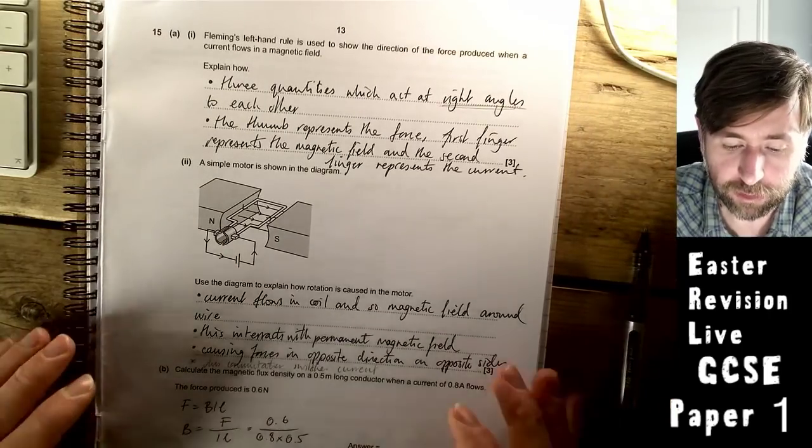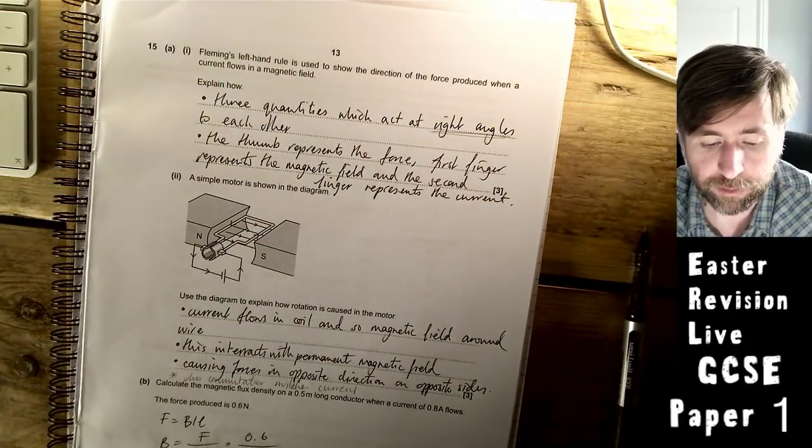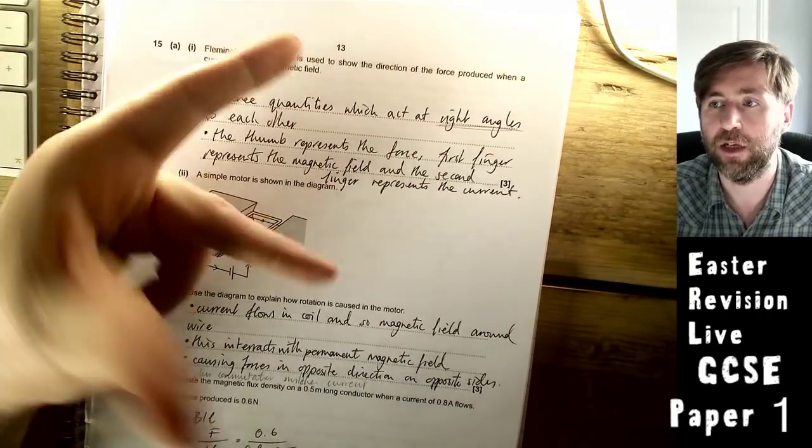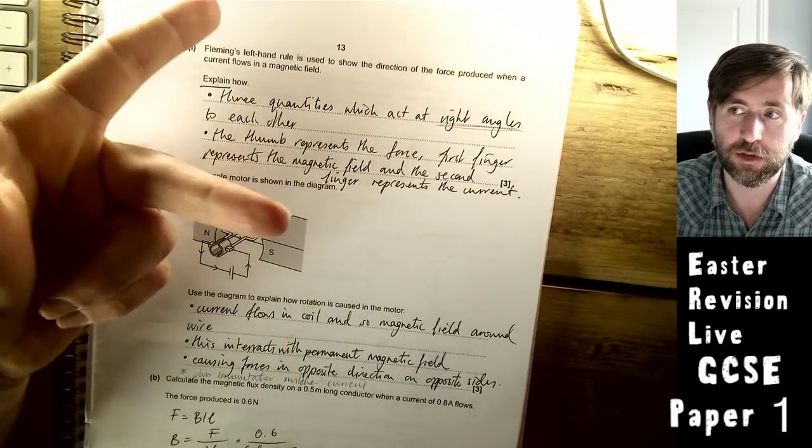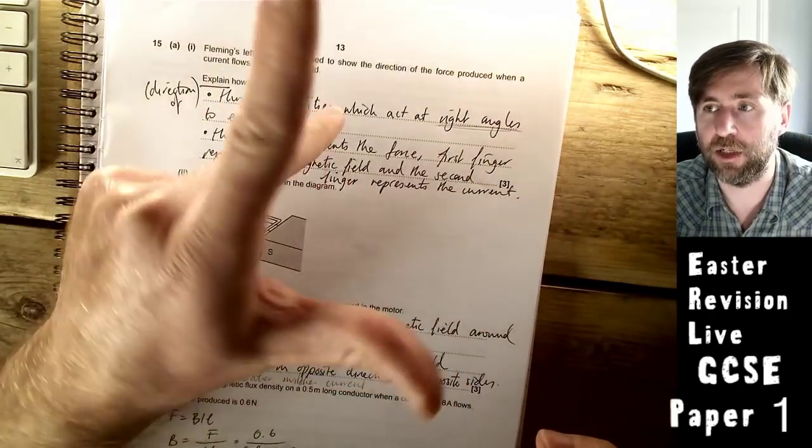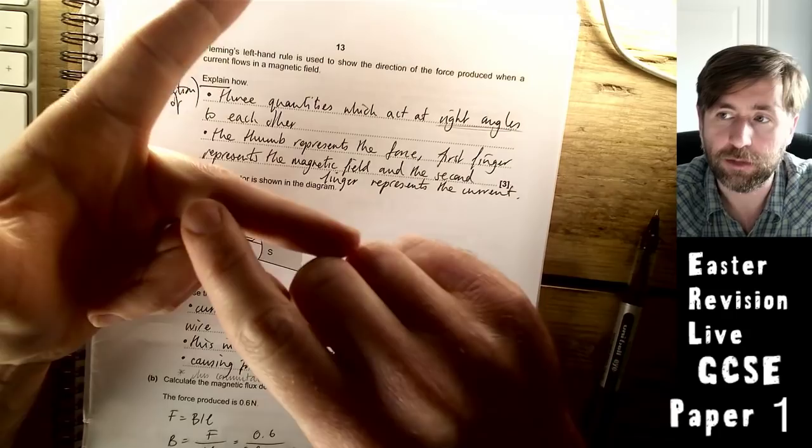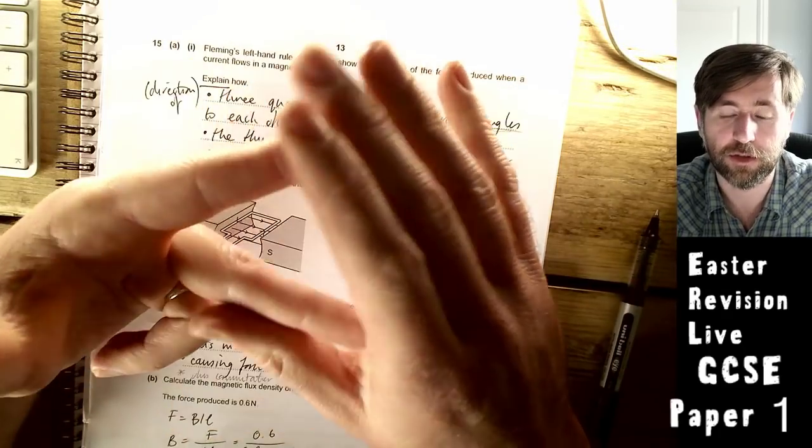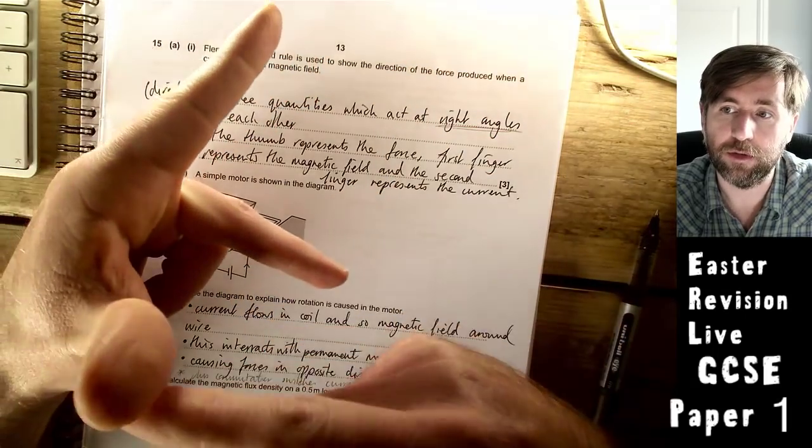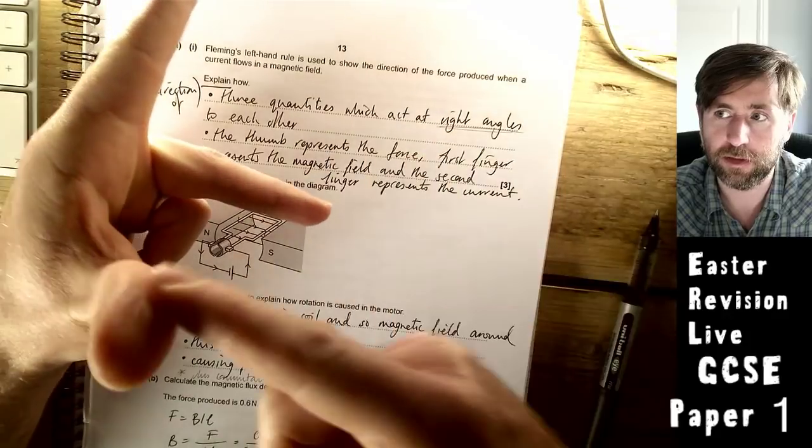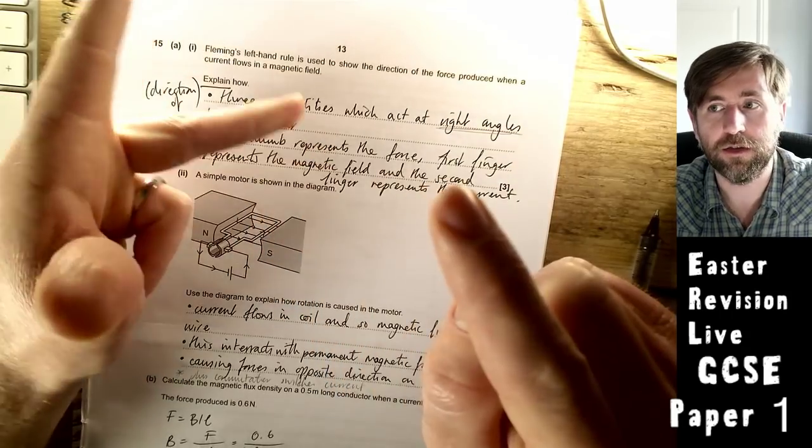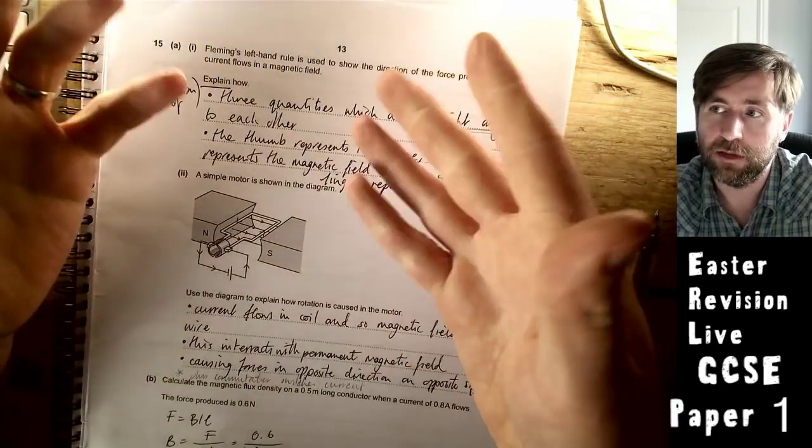Fleming's left-hand rule is used to show the direction of the force produced when a current flows in a magnetic field. Explain how. Fleming's left-hand rule shows the direction of three quantities which act at right angles to each other. A lot of people get confused with this stuff because you've got directions rather than sizes. It's almost like an equation to work out direction. The thumb represents the force, the first finger represents the magnetic field, and the second finger represents the current.